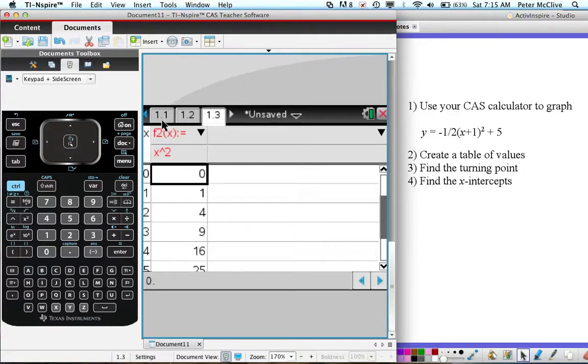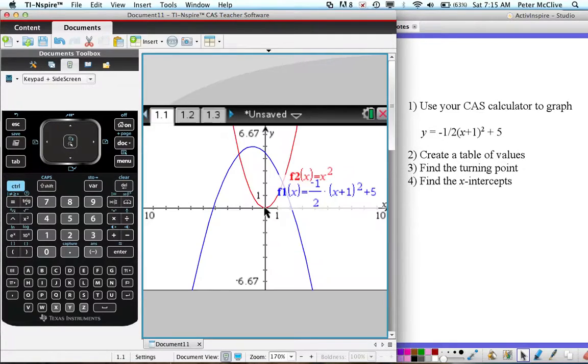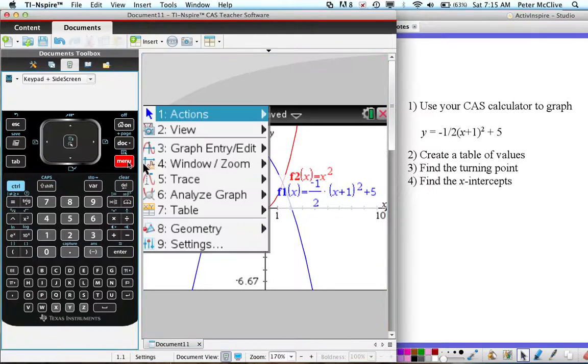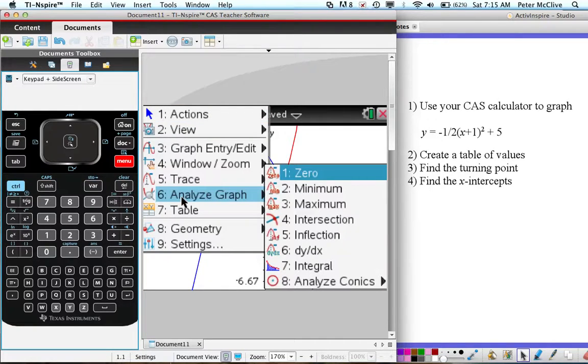We want to find the turning point of our original graph, so I'm going back to that graph 1.1 page. Now I want to analyze the graph, so again go to menu. This is specific for graphs now, so the menu's actually changed from what we saw on the spreadsheet page. I want to analyze, so that's number 6. I want to find the turning point.